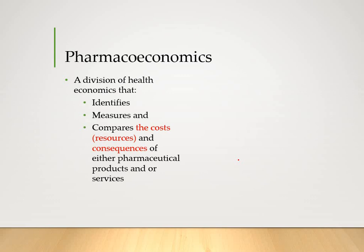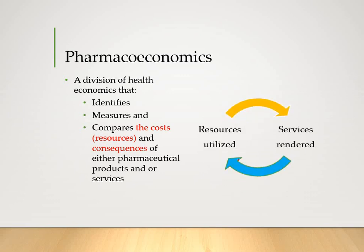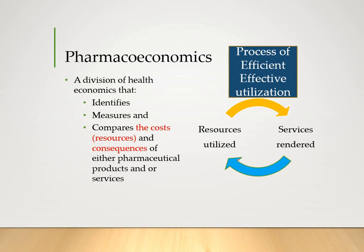A hospital is an intricate organization where different types of services are provided, like pharmacy services, medical services, and so on. In a nutshell, pharmacoeconomics focuses on resources being utilized versus the services being rendered, and it is a process of efficient and effective utilization of resources. Thus, pharmacoeconomics is a division of health care services that identifies, measures, and compares the cost and resources consumed to provide a particular type of service.